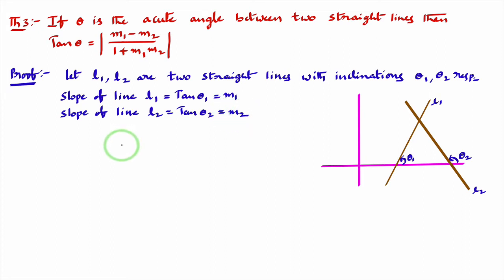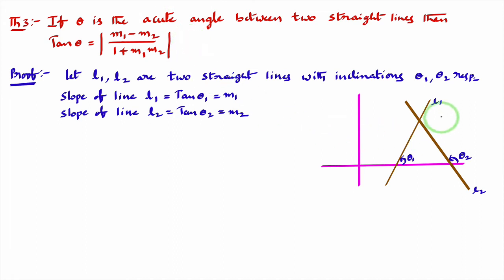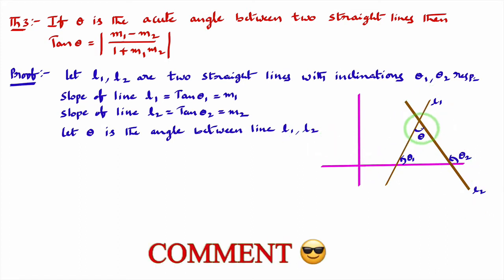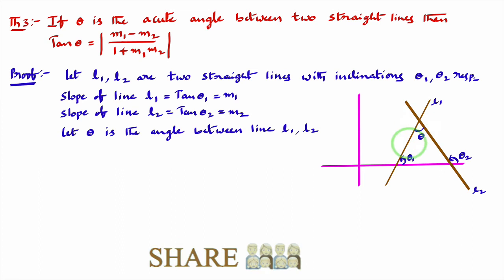What we are trying here is to find the angle between two straight lines, and this formula is for the acute angle. First, observe here: theta is the angle between lines l1 and l2.